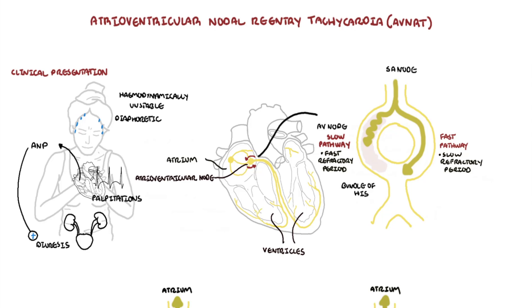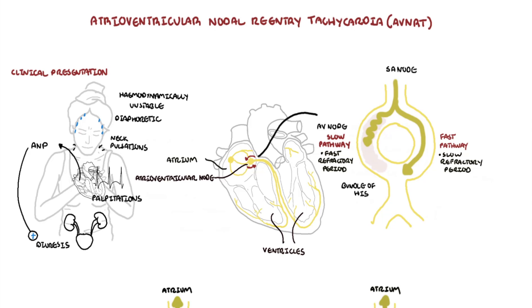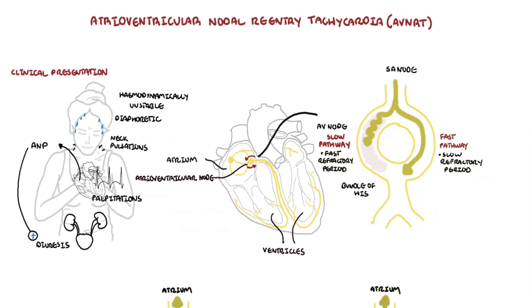ANP is a hormone that promotes excretion of sodium and water. Neck pulsations occur secondary to simultaneous contraction of the atria and ventricles against the closed mitral and tricuspid valves, and this is called the Brugada phenomenon.